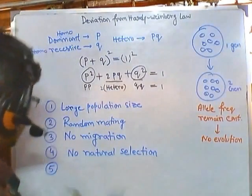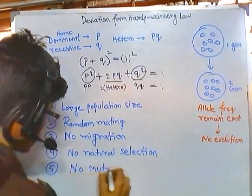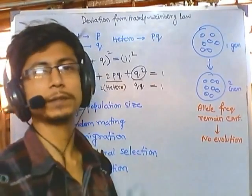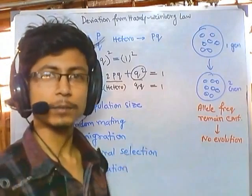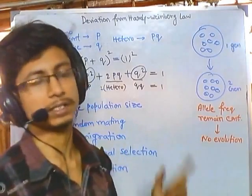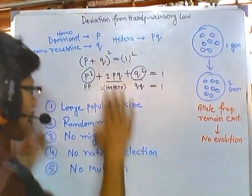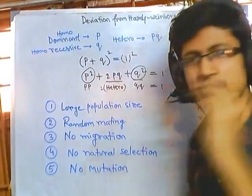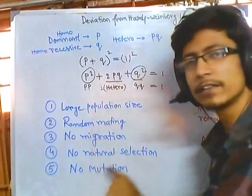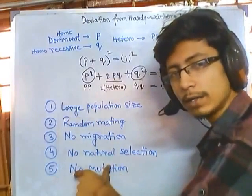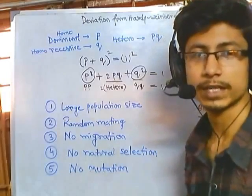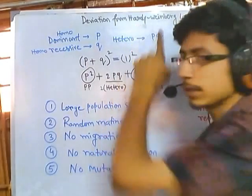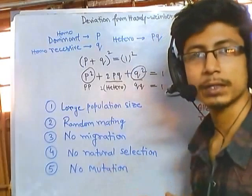The fifth condition is no mutation. There should be no mutation. But in any population, mutation must be there because population members are always exposed to different mutagens. So if you fulfill all five important criteria, then only Hardy-Weinberg equilibrium will be maintained. Because it is extremely difficult to maintain all five things at the same time — if even one is not maintained, the equilibrium won't be standardized. That is why Hardy-Weinberg equilibrium is just a theory; it is actually not possible in the real world.